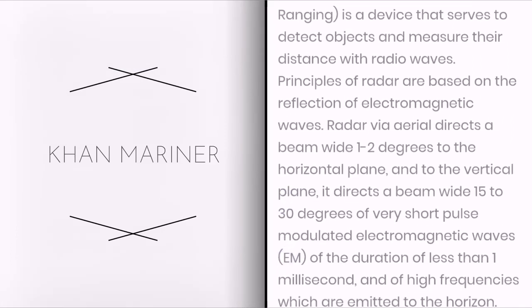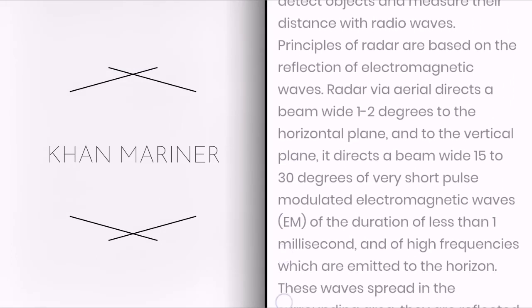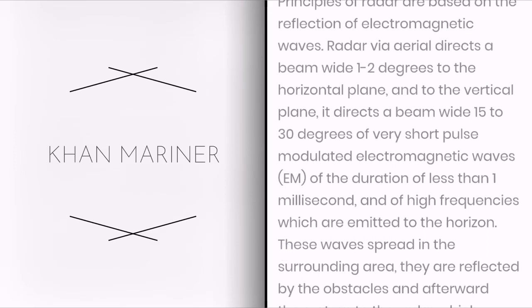Radar via aerial directs a beam wide 1 to 2 degrees to the horizontal plane and to the vertical plane it directs a beam wide 15 to 30 degrees of very short pulse modulated electromagnetic waves (EM) of the duration of less than one millisecond and of high frequencies.